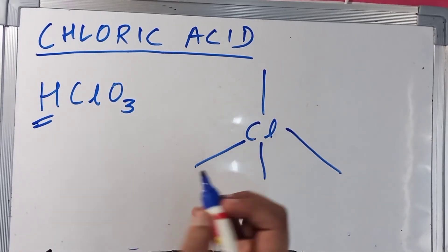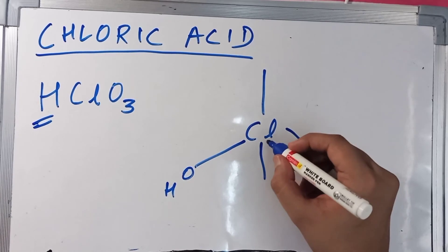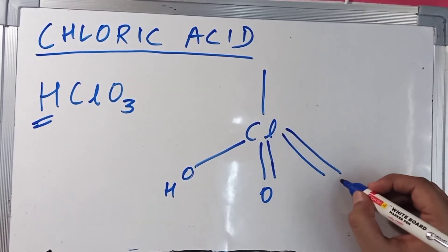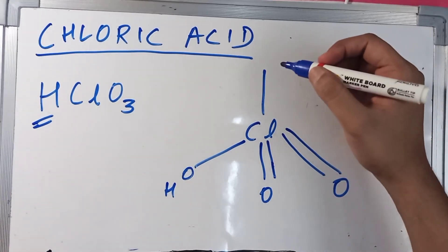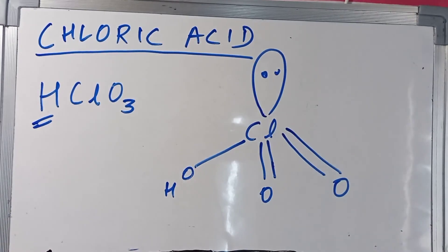So, this was chlorine. We have one OH bond, one oxygen bond, another oxygen bond, and this is the lone pair. Done. So, this is the actual geometry of chloric acid.